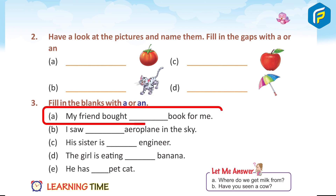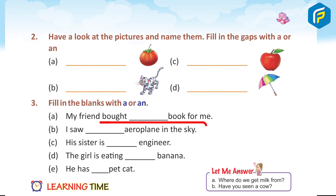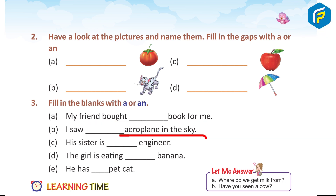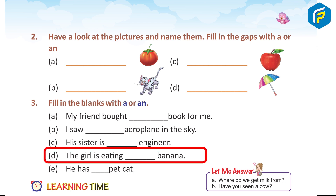Three: Fill in the blanks with 'a' or 'an'. A) My friend bought a book for me — answer: a. B) I saw an aeroplane in the sky — answer: an. C) His sister is an engineer — answer: an.